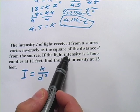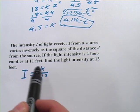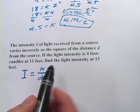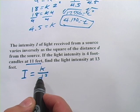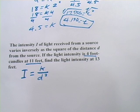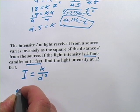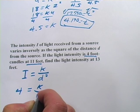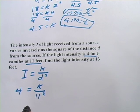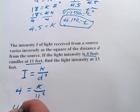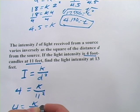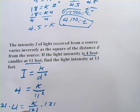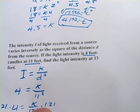It says here next that if the light intensity is four foot candles at 11 feet, find the light intensity at 13 feet. So we're going to take these two facts, the distance we have here and the intensity, four foot candles, and plug them in. So that would be four for the intensity over 11 squared. And now we can solve for K. So 11 squared is 121, and then we multiply both sides by 121, and we get K equals 484.